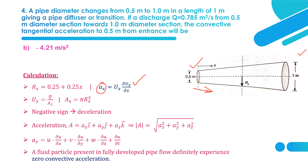To find Ax = ux·∂ux/∂x, first calculate ux = Q/A at section x, where A = π·rx². The radius at x is rx = 0.25 + 0.25x. Substituting known values with x = 0.5 m gives the answer. The sign is negative because of deceleration — flow goes from smaller to larger diameter, so acceleration is negative: −4.21 m/s².